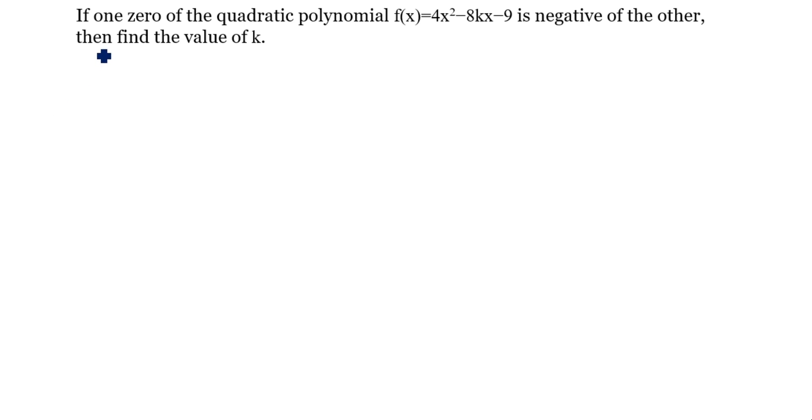This is a very important problem. If one zero of the quadratic polynomial f(x) = 4x² - 8kx - 9 is negative of the other, then find the value of k.